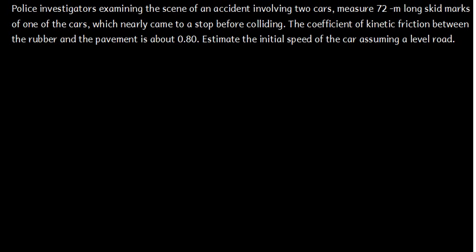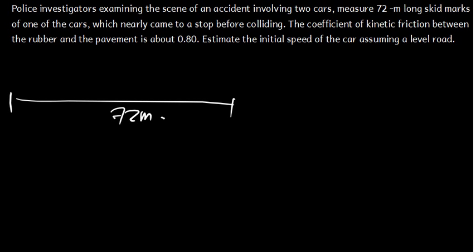So let's say we have got this question: a police investigator examined the scene of an accident involving two cars, and measures a 72-meter-long skid mark of one of the cars which nearly came to a stop before colliding. The coefficient of kinetic friction between the rubber and the pavement is about 0.8. Estimate the initial speed of the car assuming a level road. They are saying the distance is 72 meters, and this car was coming to rest, so the final velocity is zero. We want to find the initial velocity, and the only force present is the friction force.